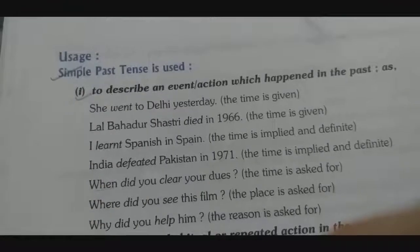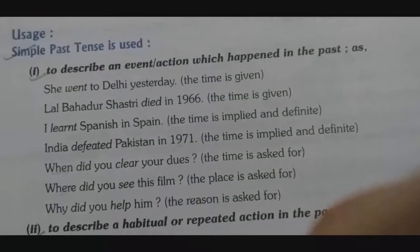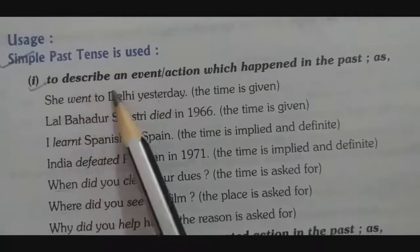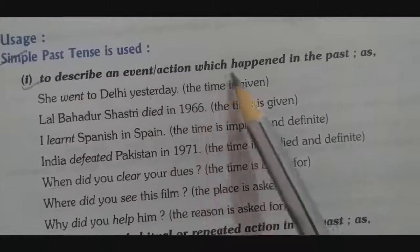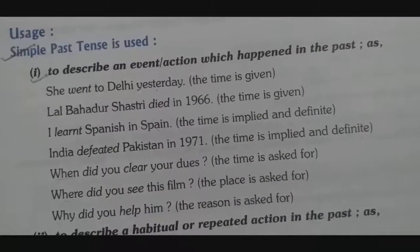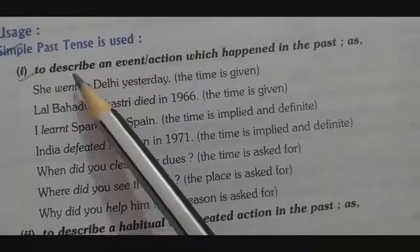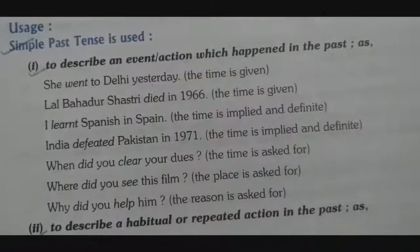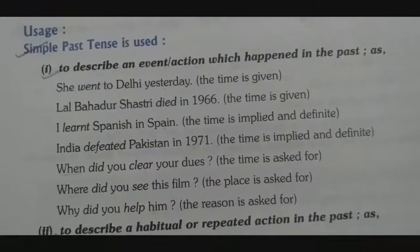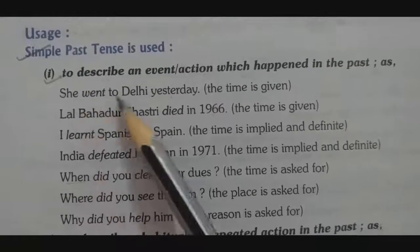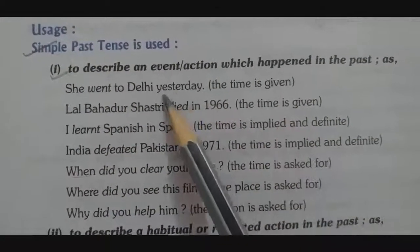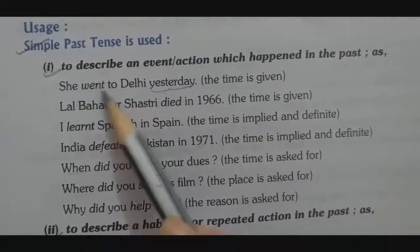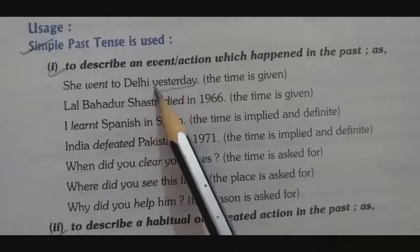Simple past tense is used to describe an event or action which happened in the past. For example, 'She went to Delhi yesterday.' Here the time is given — yesterday — and that is a past action. So 'went' is the simple past tense form.